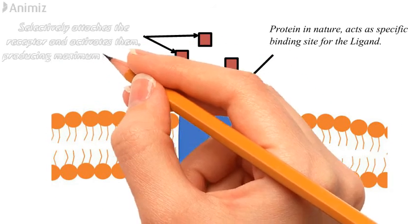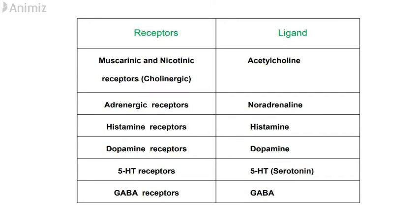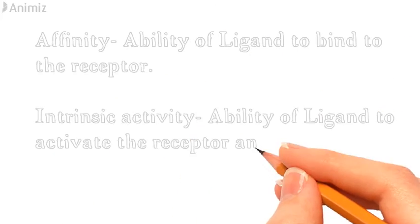Ligands are endogenous molecules which selectively attach to the receptor and activate them, producing maximum response. For different receptors there are different types of ligands: for muscarinic and nicotinic receptors, acetylcholine is the ligand; for adrenergic receptors, noradrenaline; for histamine receptors, histamine; for dopamine receptors, dopamine; for 5-HT receptors, 5-HT which is serotonin; and for GABA receptors, GABA is the ligand.